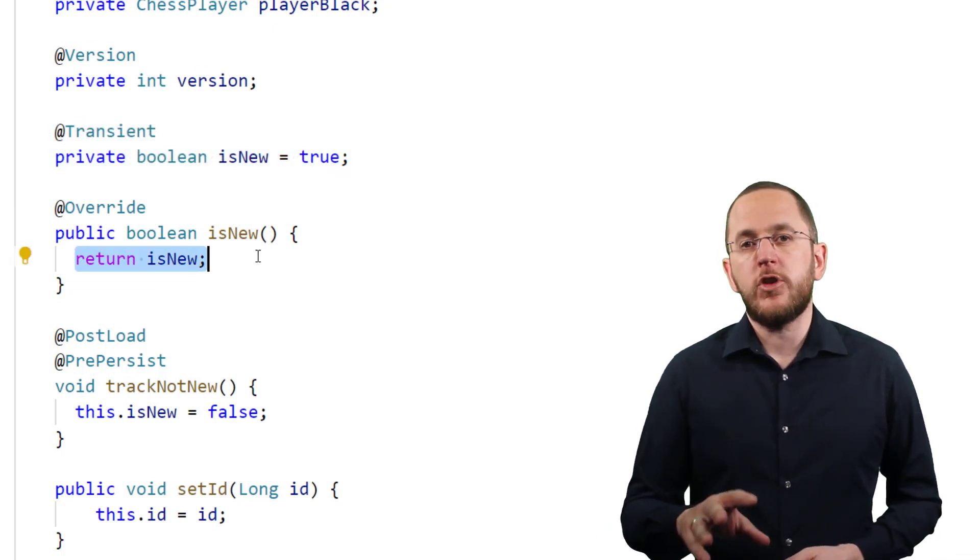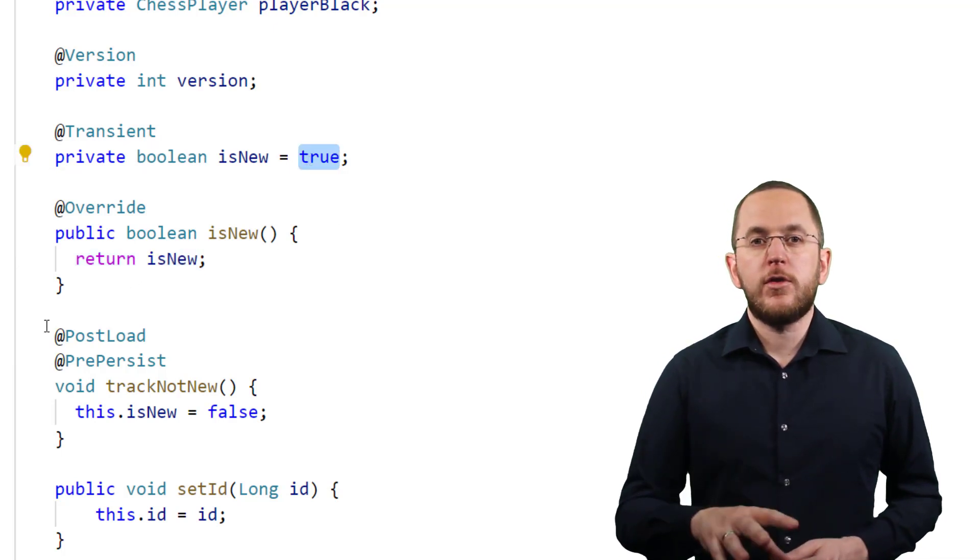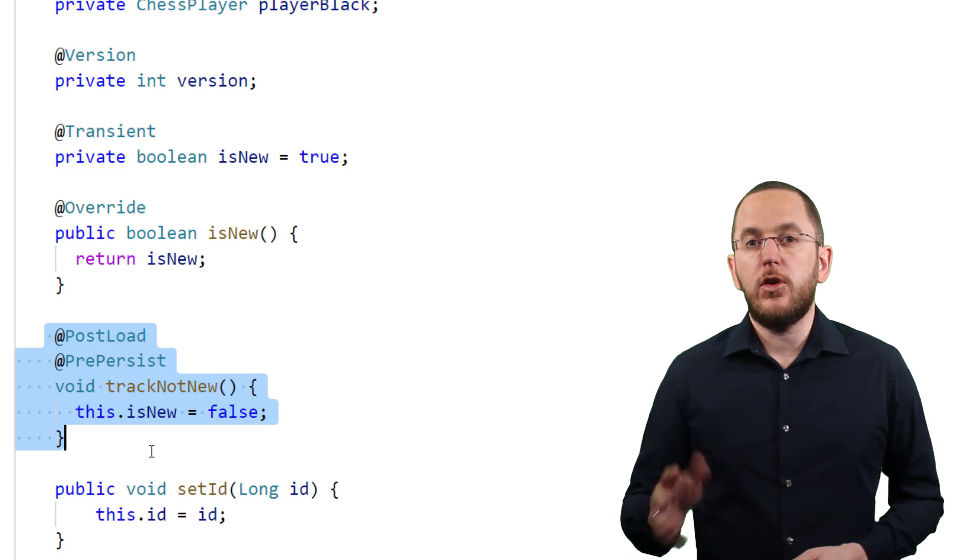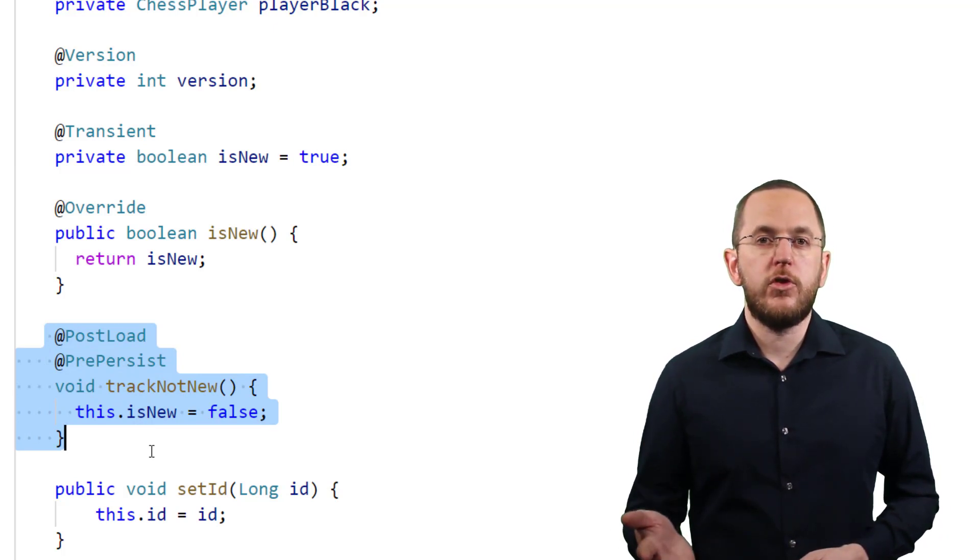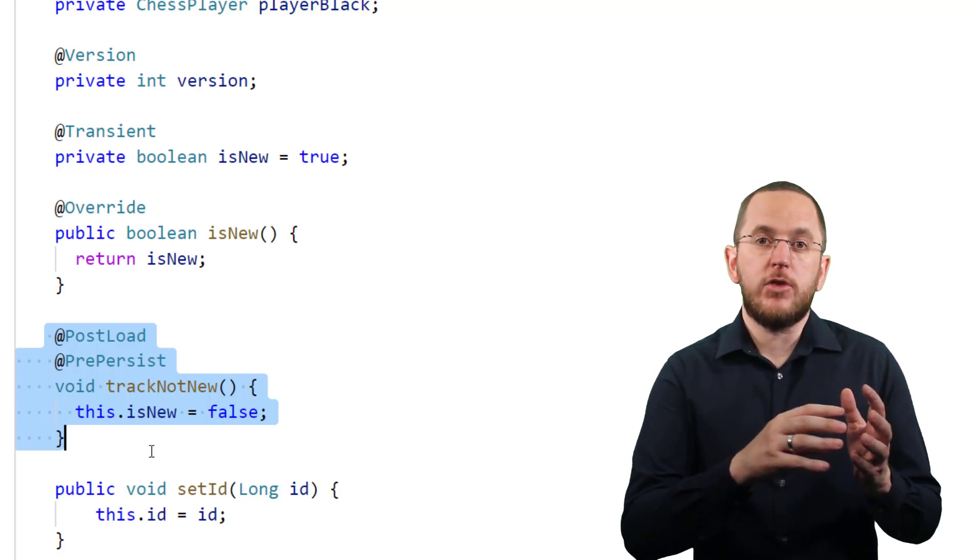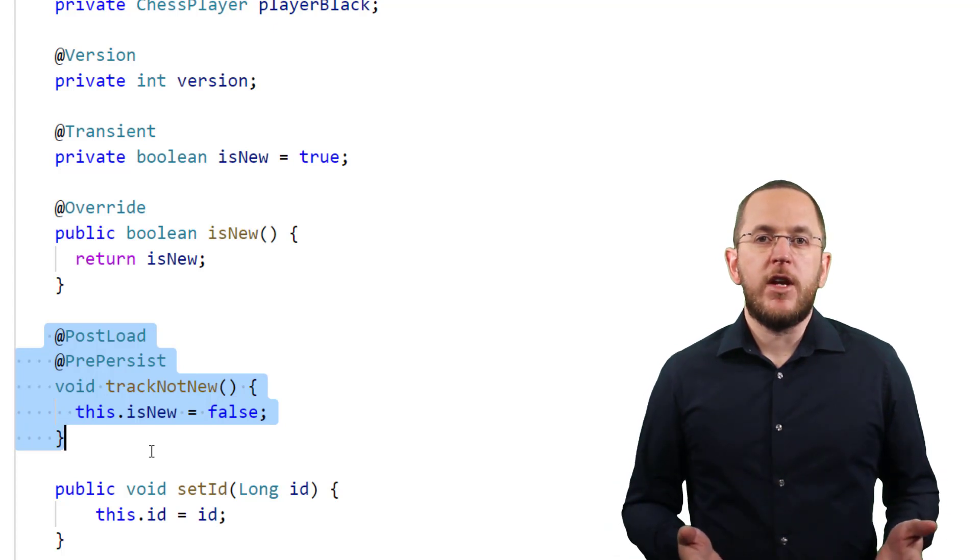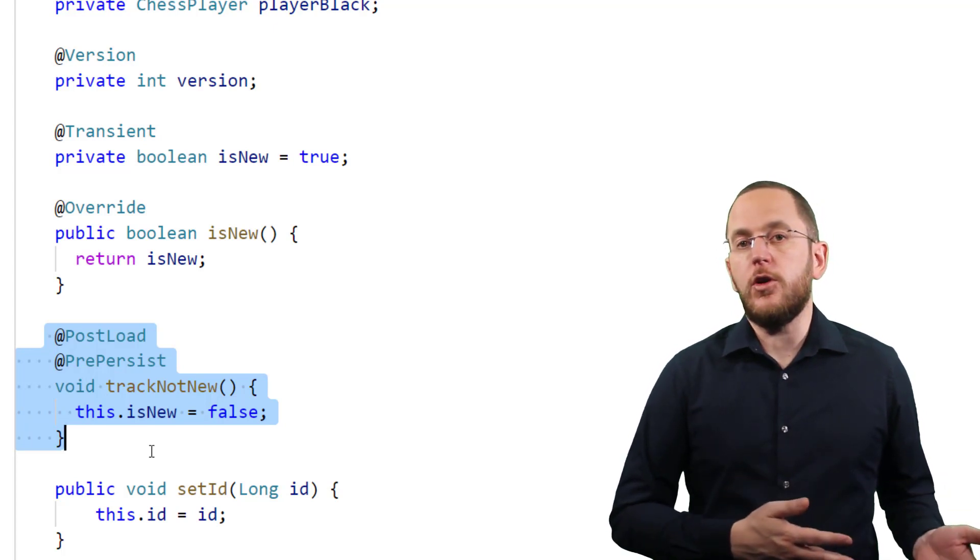When you create a new object, the attribute gets initialized with true. The @PostLoad and @PrePersist annotations on the trackNotNew method ensure that your persistence provider calls this method after it fetched an entity object from the database or before it persists it. The method then changes the isNew flag to false.